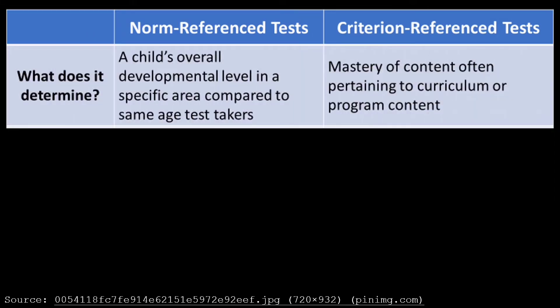What does each test determine? Norm Reference Tests determine a child's overall developmental level in a specific area compared to same-age test takers. Criterion Reference Tests determine mastery of content, often pertaining to curriculum or program content.